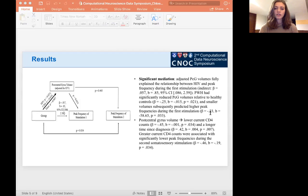We further used important HIV clinical metrics in the model to relate our structural and functional information. The model revealed that smaller postcentral gyrus volume was associated with lower current CD4 counts and a longer time since HIV diagnosis. Greater current CD4 counts were also interestingly associated with significantly lower peak frequencies or peak frequencies that were more similar to controls during the second stimulation response.